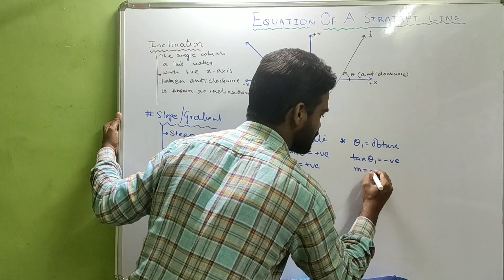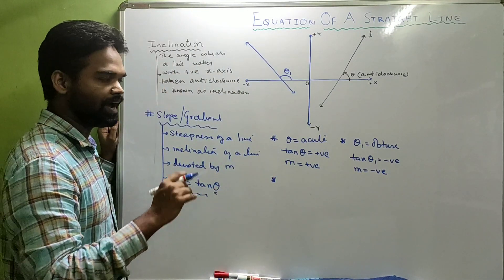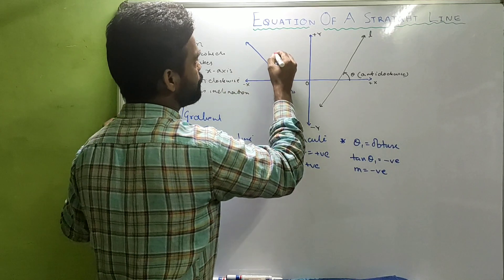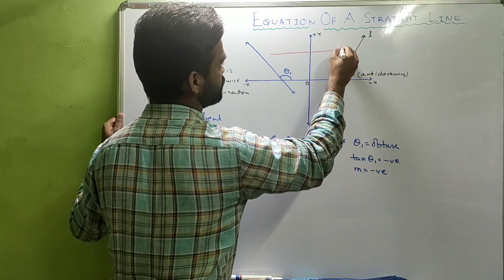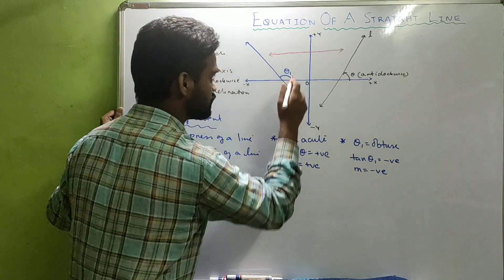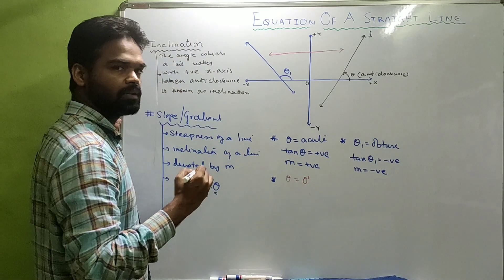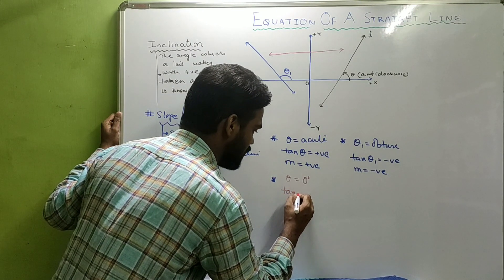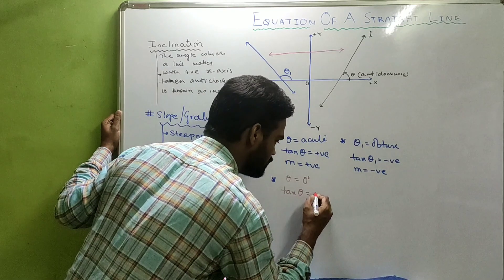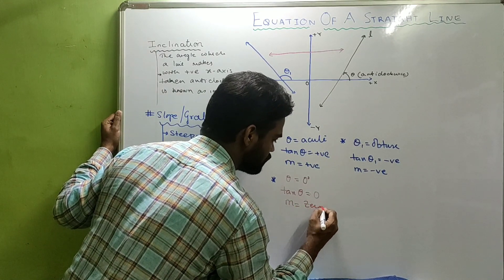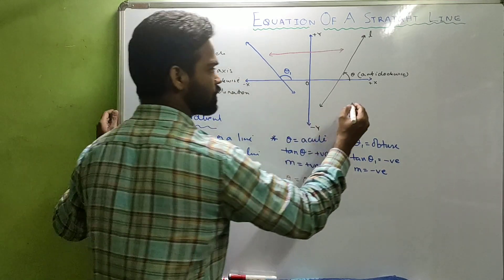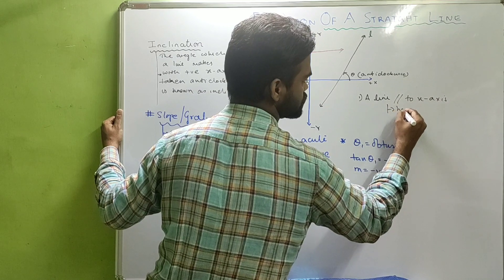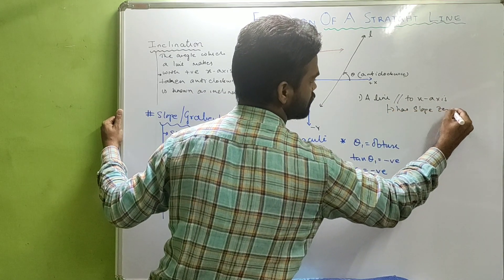So M can be positive as well as negative. Now, if I take a line parallel to the x-axis, theta is 0°. The angle between this line and the positive x-axis is 0, which means tan theta equals tan 0° equals 0. So the slope is 0 — a line parallel to the x-axis has slope 0.